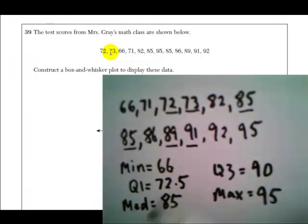So we have the five numbers we need to construct the box and whisker plot. 66, 72.5, 85, 90, and 95. So write down these numbers. I'm going to switch out this piece of paper. And then we're going to draw the box and whisker plot.